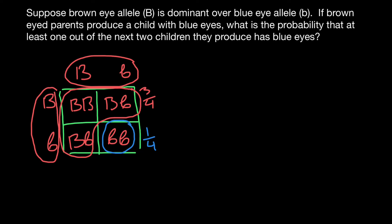Let's say this is the male parent and this is the female parent. According to our problem, these parents are going to have two more children. So what possible combinations might this couple have? They may have two children with brown eyes, or a combination of one child with brown eyes and one with blue eyes, or two children with blue eyes. These are the three possible outcomes.